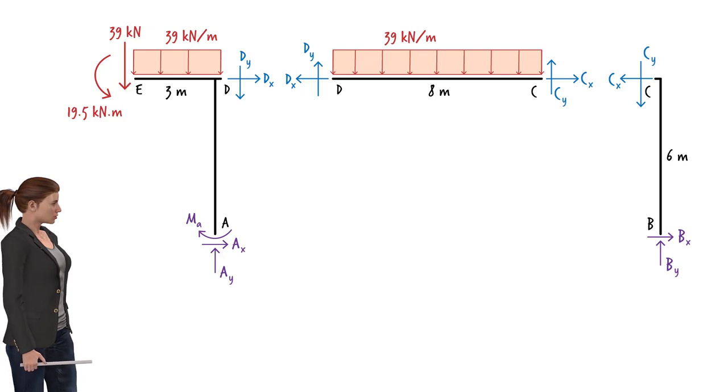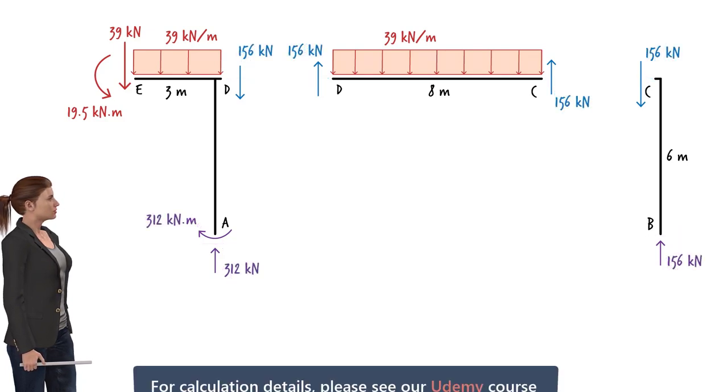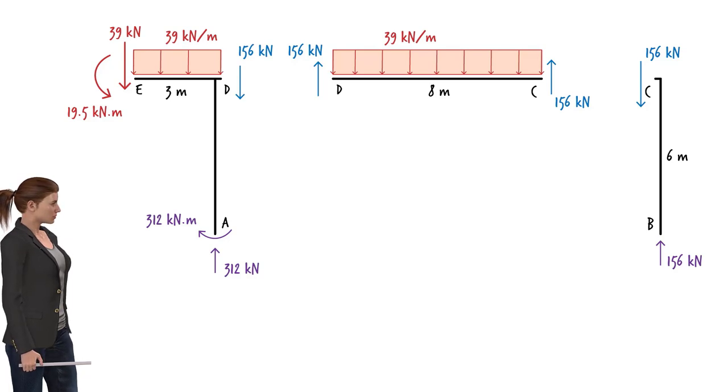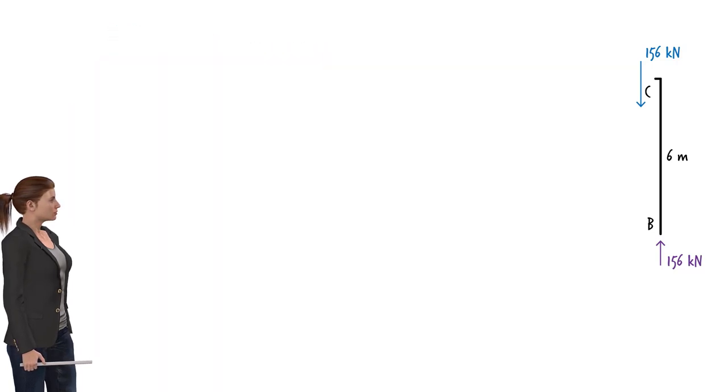Here are the calculation results. For step-by-step calculations, please see the extended version of the lecture on Udemy. Knowing the member end forces, we can easily draw the shear and moment diagrams for the frame. Let's draw the diagrams for each segment separately. Afterwards, we put them together to form the shear and moment diagrams for the entire frame. Note that column BC is subjected to an axial force only. Both shear and moment in the column are zero. So there is no shear or moment diagram to be drawn for this member.